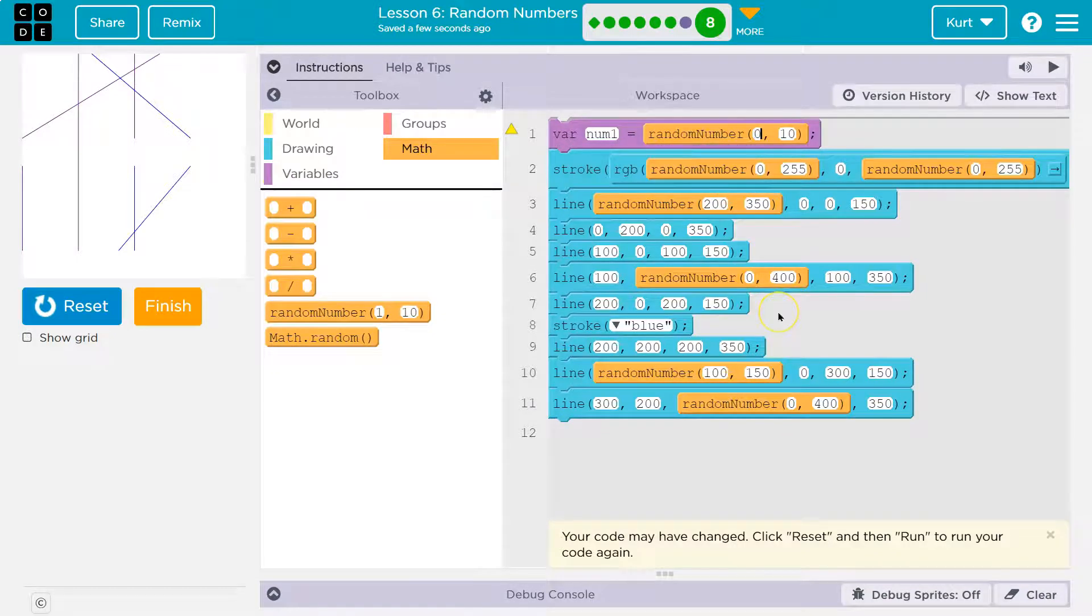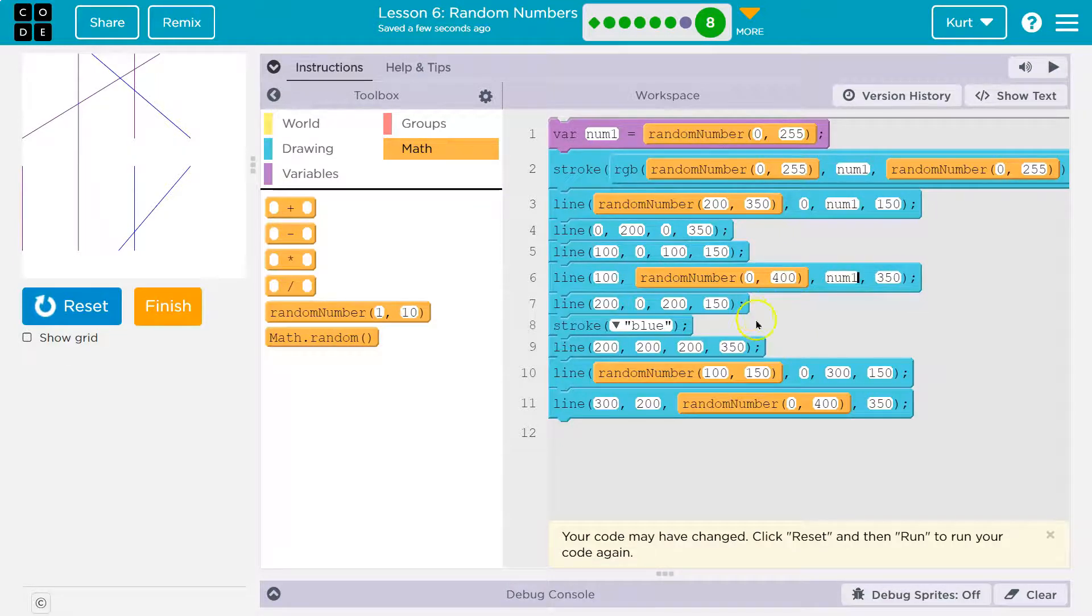because I'll use it all sorts of different places. And I'm going to do 0 to 255 again. And that way I can use this as a color, but I can also go down here and just kind of throw it anywhere. And num1.